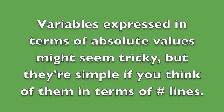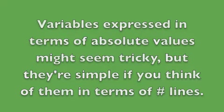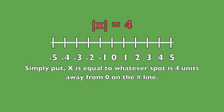So, variables expressed in terms of absolute value can seem really tricky, but they're simple if you think of them in terms of number lines — which is something you're definitely going to want to do on the GRE. So think of the expression: the absolute value of x is equal to four.